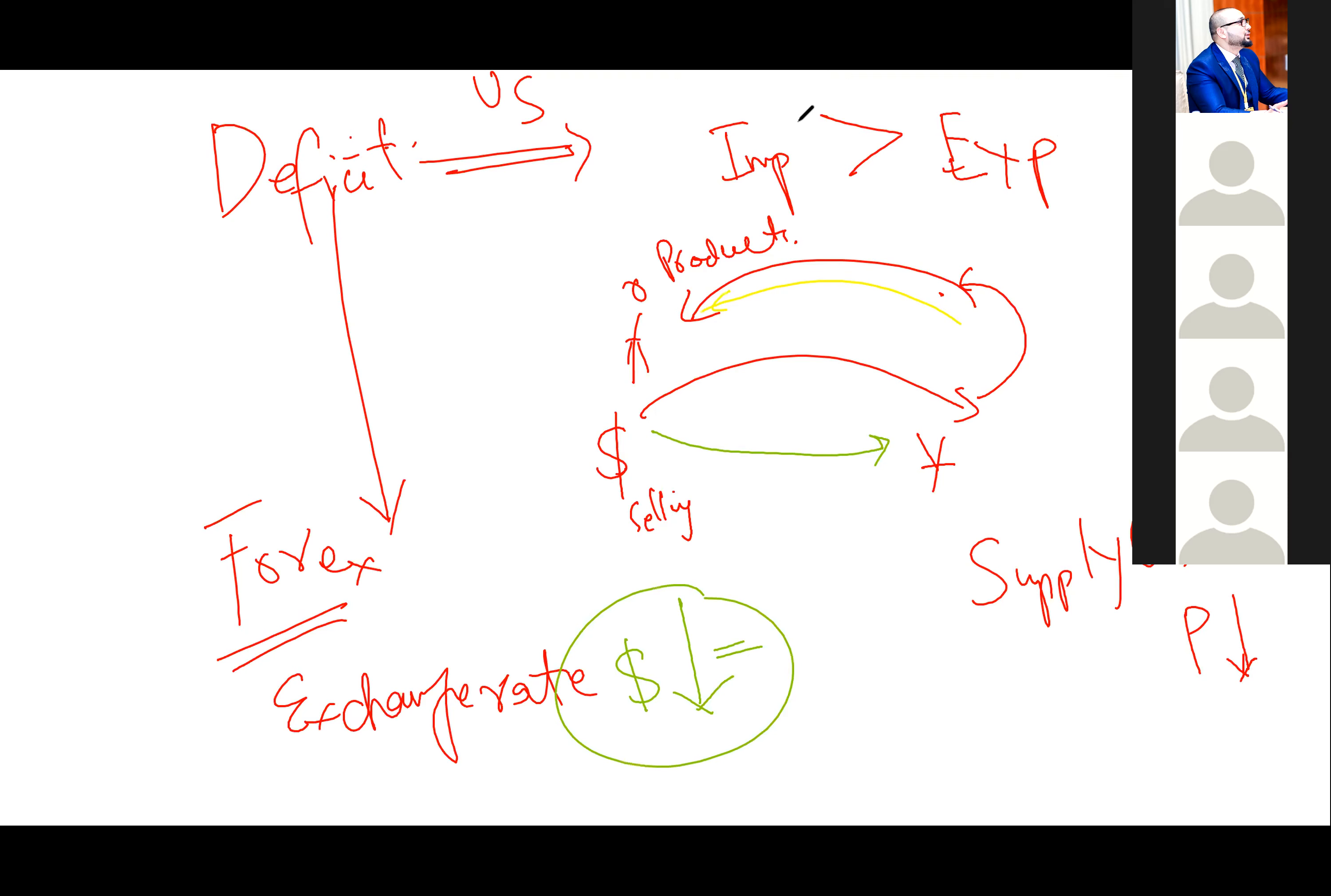And what happened? Deficit is going to be reversed. How? The exports start rising. And because our currency is decreased now, it is more costly for us to buy imported goods. So our imports start decreasing, and we are heading towards surplus.